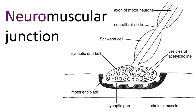The neuromuscular junction is the junction or connection between the nervous system and the muscular system. The nerve impulse comes down the axon of the motor neuron, then crosses a small gap — bridged by the chemical neurotransmitter acetylcholine. The nerve impulse causes release of acetylcholine, which diffuses across the synaptic gap, depolarises the motor end plate, and stimulates contraction of the muscle. Neuromuscular: the connection between the nervous and muscular system.